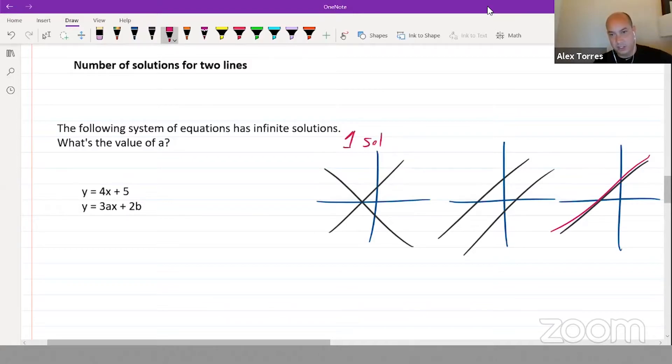For this system of equations with infinite solutions, they're actually the same line as each other. That means if they're both in y equals mx plus b, this 3a is equivalent to this 4 and this 2b is equivalent to the 5.